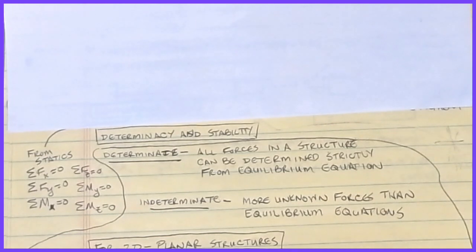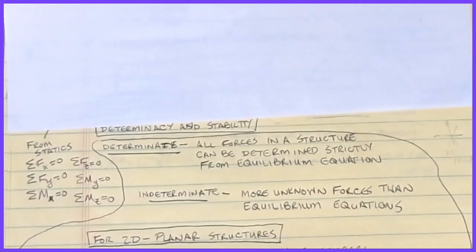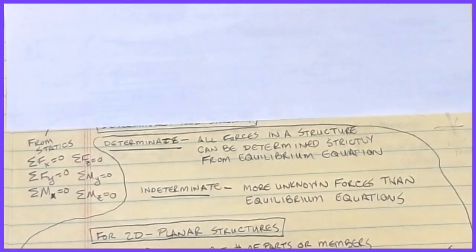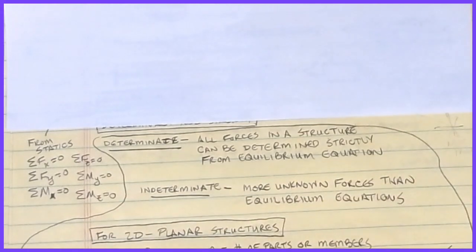Determinacy is kind of the in-between step. If we can do a calculation for determinacy, I can tell you how many equations you need to solve a structure, whether it's solvable using classical statics methods or whether you need some more approximate method using computer software. I can also tell you whether a structure is stable both internally and externally. A structure is determinate if all forces can be determined strictly from the six equilibrium equations. It's indeterminate if there are more unknown forces on a free body diagram than equations to work with.